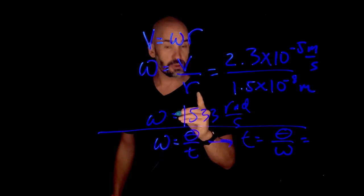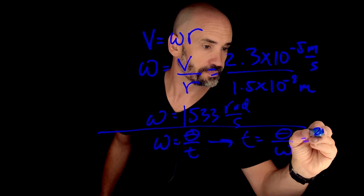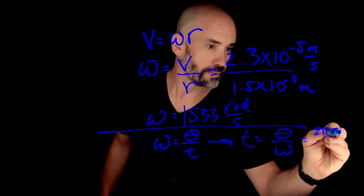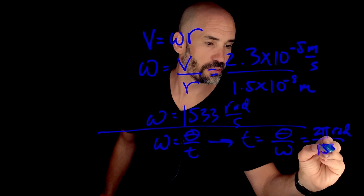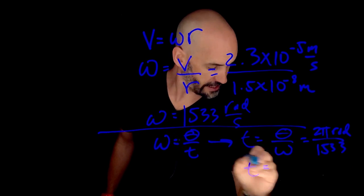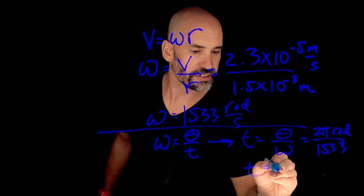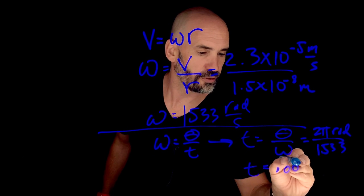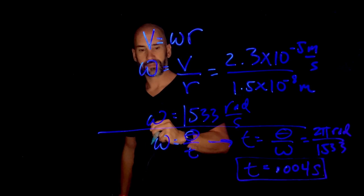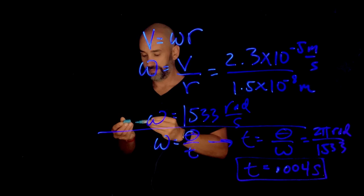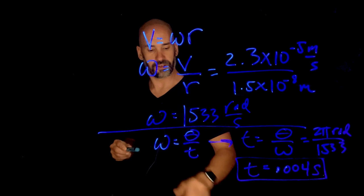So one revolution, as we know, is 2 pi radians. And we know that the angular speed is 1533. So it should take just a tiny fraction of a second, 4 milliseconds, to make one full revolution. Again, remarkable. Life's really cool, how it works.